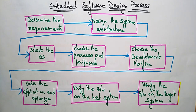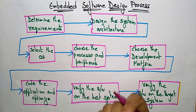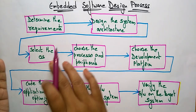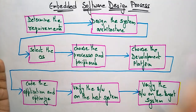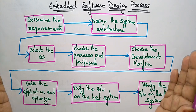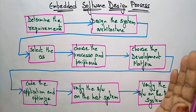Hi students. Coming to the next topic, that is the embedded software design process — how your embedded software is going to be designed and what are the basic steps you need to take to design the software for your embedded system. There are totally eight steps you have to consider while designing your embedded system.